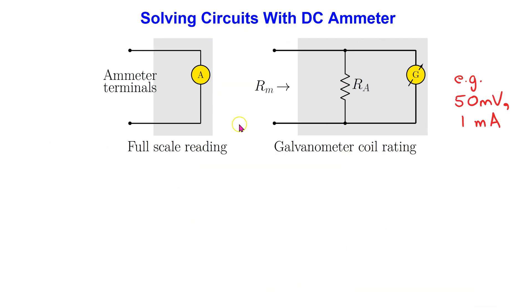The block diagram of an analog ammeter is shown here. It consists of a galvanometer coil in parallel with a resistor RA. The coil is characterized by both a voltage rating and a current rating, typically in millivolt and milliamp. For example, the coil rating can be 50 millivolt and 1 milliamp. This means that when the coil is carrying 1 milliamp current, the voltage drop across it is 50 millivolt and the galvanometer pointer is deflected to its full-scale value. This also means that if we were to just use the galvanometer on its own as an ammeter, then the maximum current it can measure is limited to its current rating, which would be in the milliamp range only.